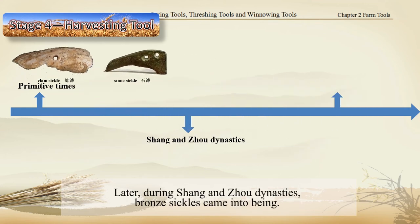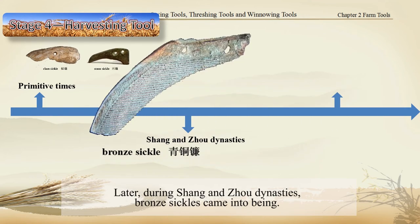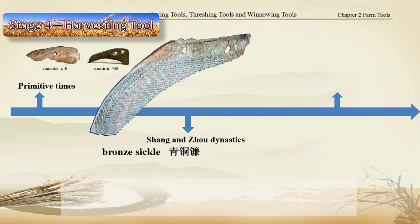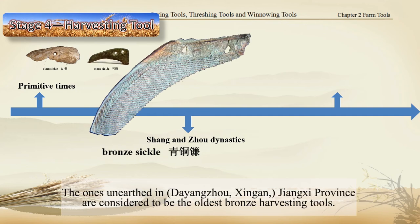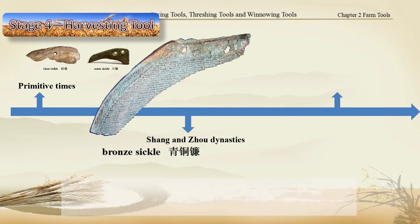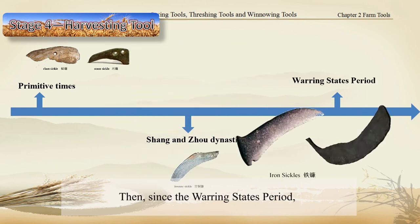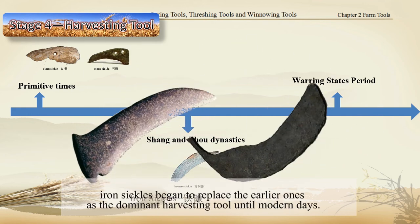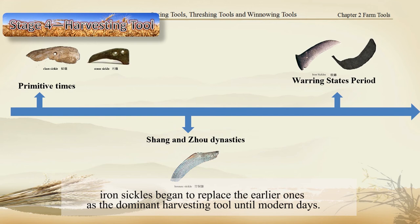Later, during the Shang and Zhou dynasties, bronze sickles came into being. The ones unearthed in Dayangzhou, Xingan, Jiangxi province are considered to be the oldest bronze harvesting tools. Then, since the Warring States period, iron sickles began to replace the earlier ones as the dominant harvesting tool, right up to modern days.